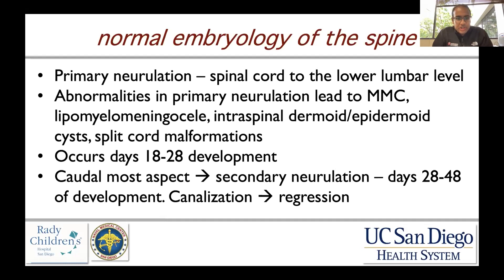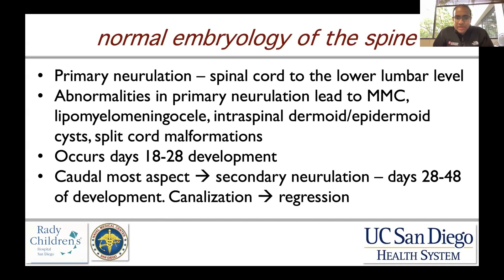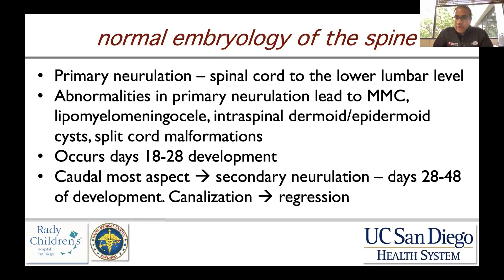Abnormalities in primary neurulation also lead to lipomyelomeningocele formation, intraspinal dermoid and epidermoid cysts, and split cord malformations — all of which will be discussed later. This process of primary neurulation typically occurs at days 18 to 28 of development. The caudalmost aspect, below the lower lumbar level, undergoes secondary neurulation, which happens between days 28 and 48, involving two processes: canalization and subsequent regression.